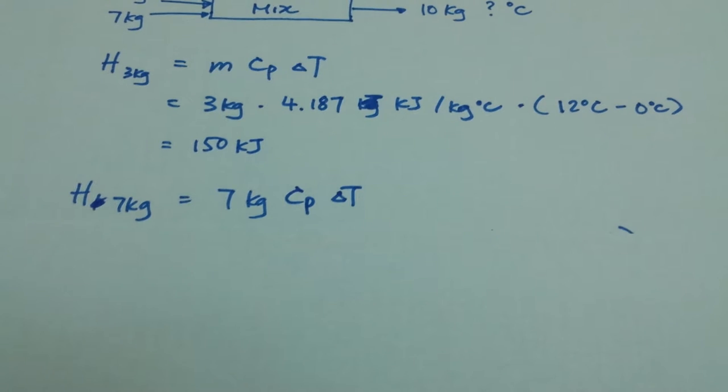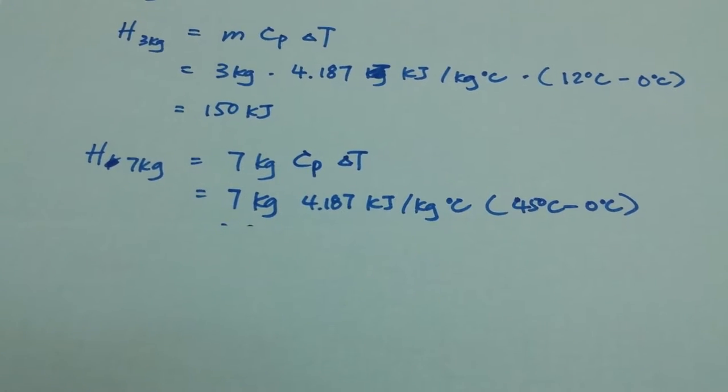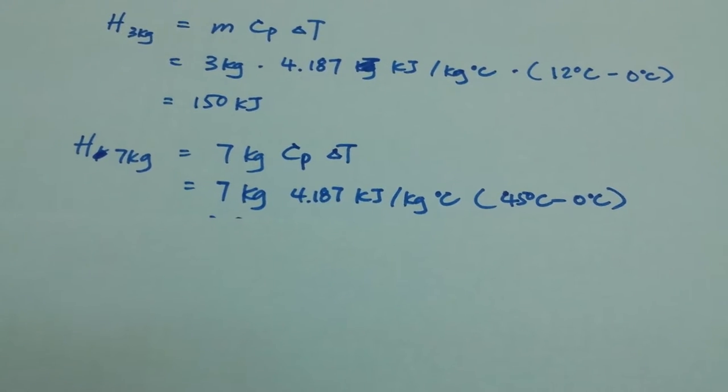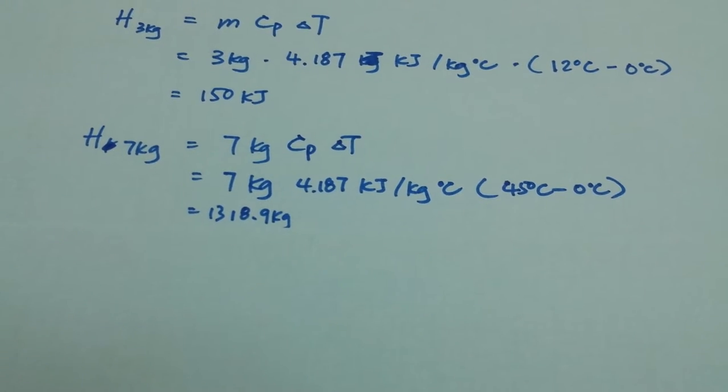We are doing the same thing with that 7 kg of water, 7 kg times the heating capacity, 3.187, and again delta T in relationship to 0 degrees Celsius. So this is the total enthalpy.